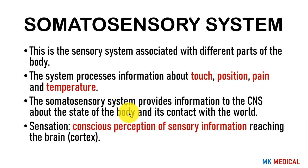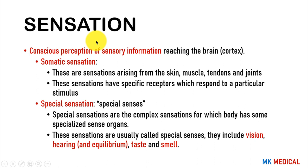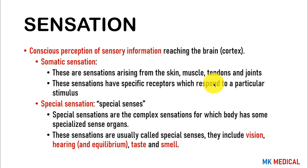Sensation can be divided into two main types: somatic sensation and special senses. Somatic sensation arises from the skin, muscles, tendons, and joints, and these sensations have specific receptors responding to particular stimuli. Special senses arise from complex sensations for which the body has specialized organs — predominantly vision, hearing and balance, taste, and smell.